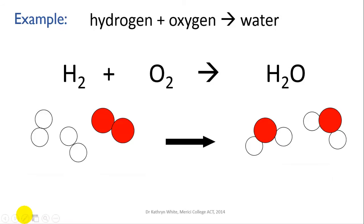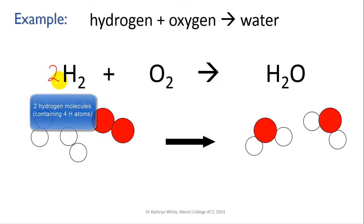The final thing we need to do is show these adjustments in the reaction equation. We do this by using large numbers out the front of each formula to show how many of each there are. For oxygen, we have only one oxygen molecule, so we leave it blank — the convention is that no number means one. For our hydrogen molecules, we have two, so we indicate that with a large 2. So: 2H2 plus O2 gives 2H2O.